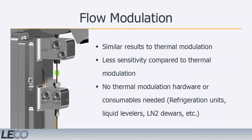Flow modulation produces very similar results as thermal modulation with one major drawback. When a GC×GC system is utilizing a flow modulator, there is a loss in sensitivity because part of the effluent is diverted away from the secondary column. However, if sensitivity is not of primary concern for your application, flow modulation systems offer the benefits of GC×GC separation without the added complexity and cost associated with the consumables required for thermal modulation hardware.